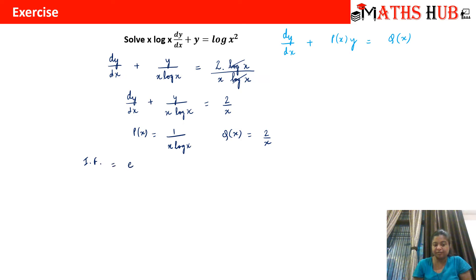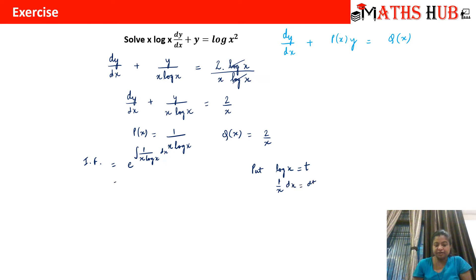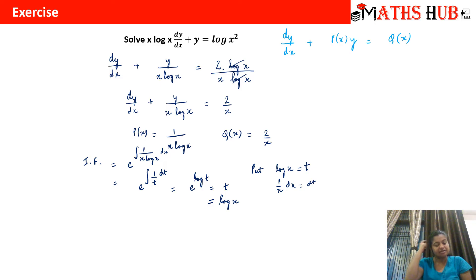The integrating factor is e raised to power ∫ 1/(x·log x) dx. We substitute log x = t, so (1/x) dx = dt. The integral becomes ∫ (1/t) dt = log t = log(log x). Therefore, e raised to power log(log x) gives us the integrating factor as log x.